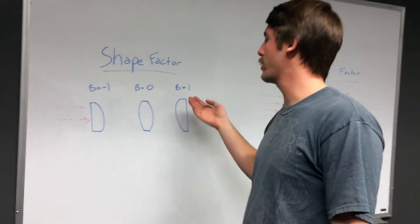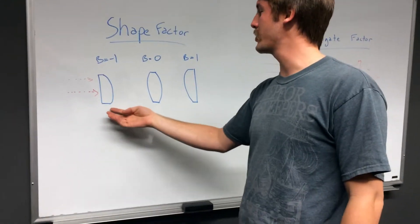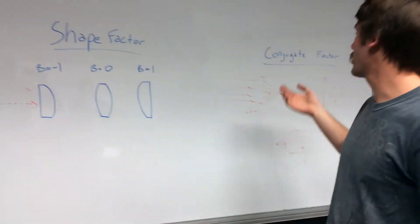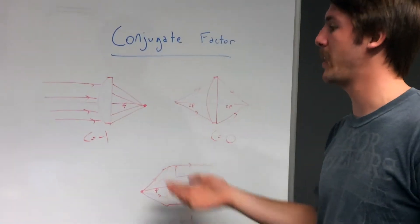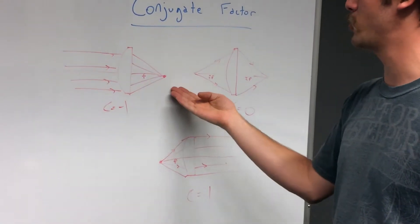Shape factor varies between negative one and one depending on the radius of curvature of the first and second surfaces. And conjugate factor also varies between negative one and one depending on the object and image locations.